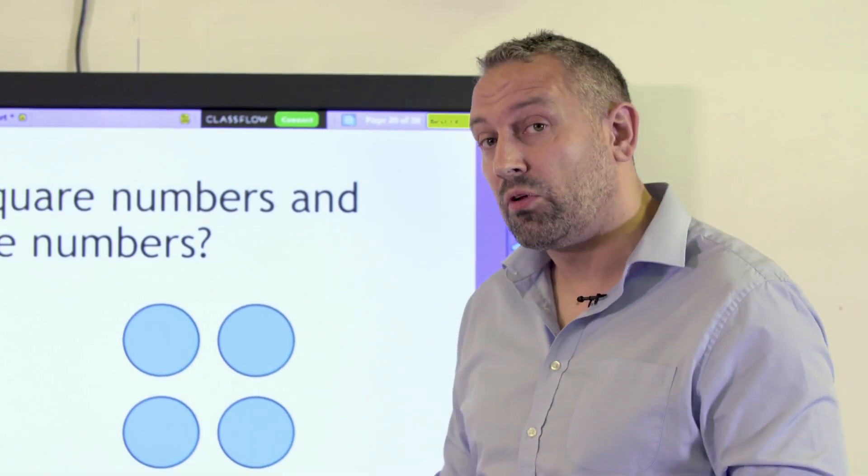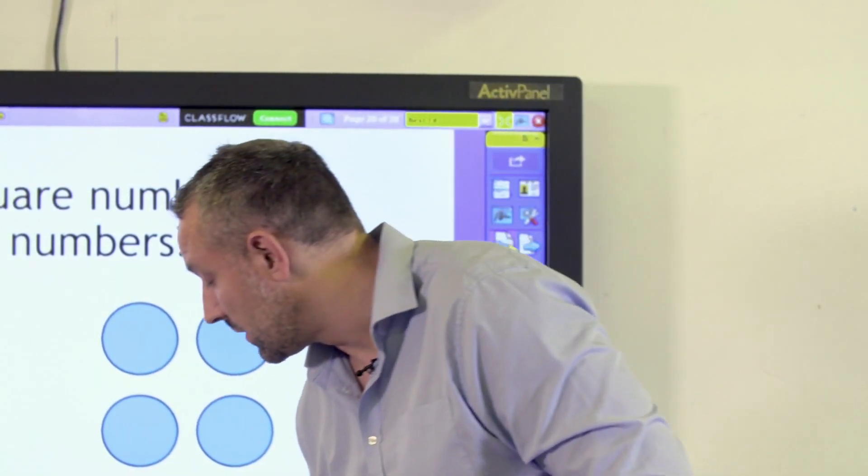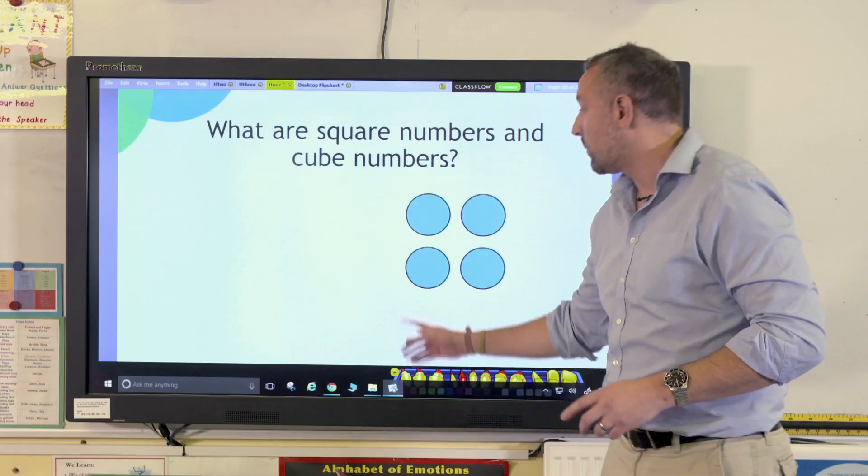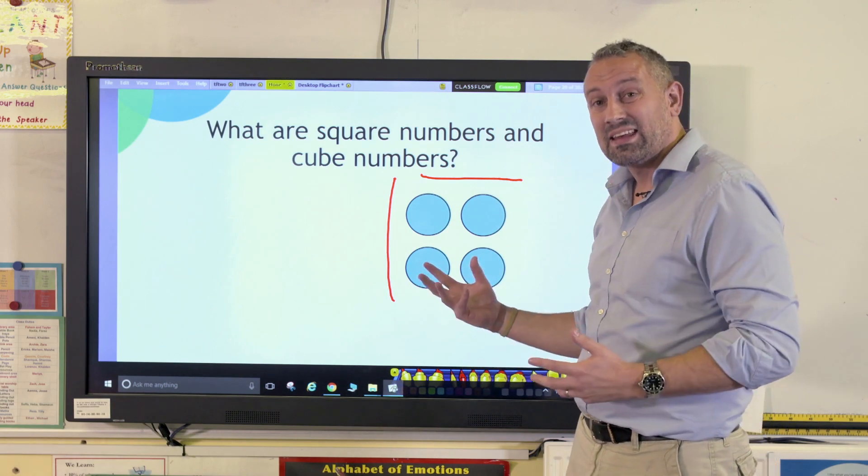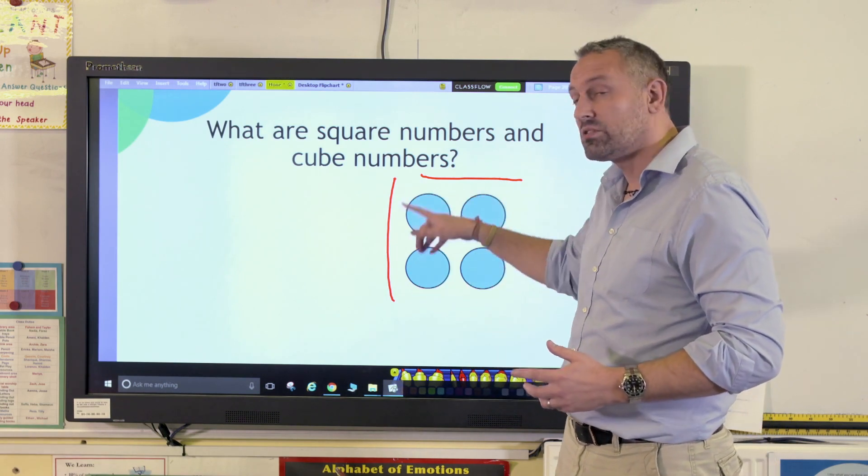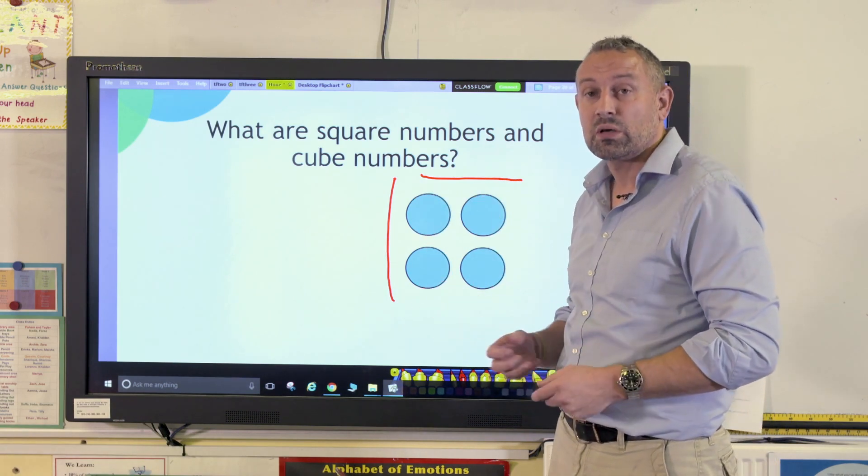Now that's really helpful for when we move from the concrete to the pictorial. Here we have 2 by 2 which is 4, and again we're dealing with those two dimensions and we're dealing with the square shape. 2 times 2 is 4.